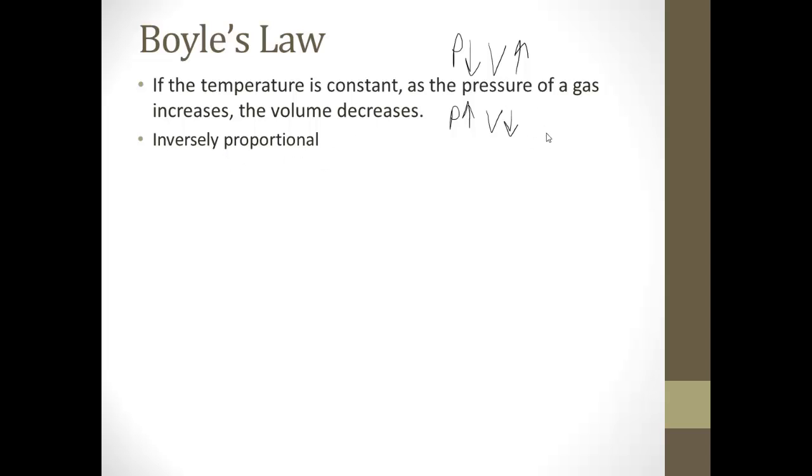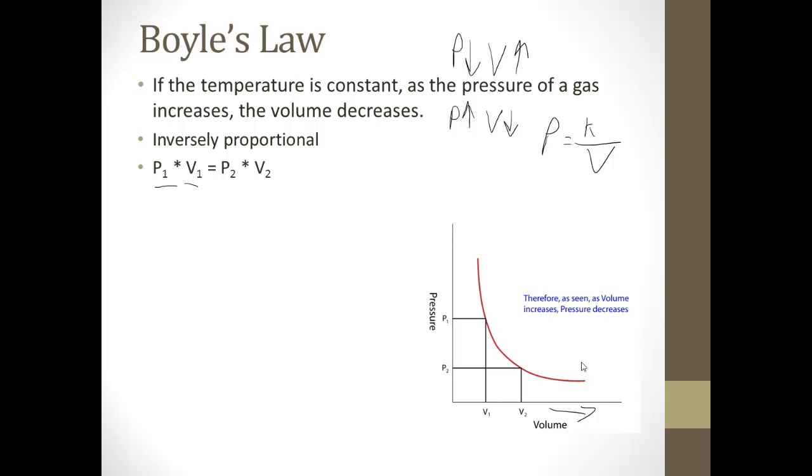So we could say something like the pressure is equal to some constant over the volume. But the way you guys would need to know it would be pressure 1 times volume 1 is equal to pressure 2 times volume 2. And if you look at a graph here, as we see volume increasing, pressure is decreasing. As volume decreases, pressure is increasing.